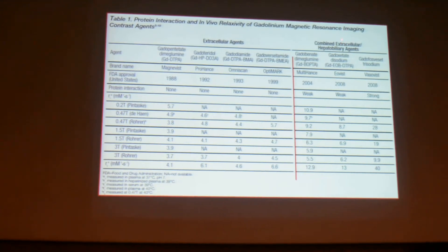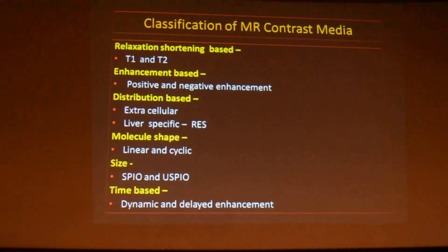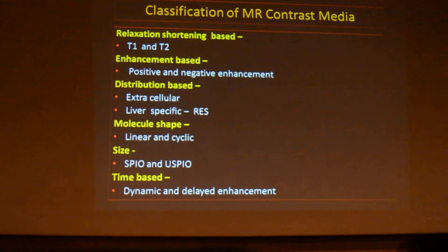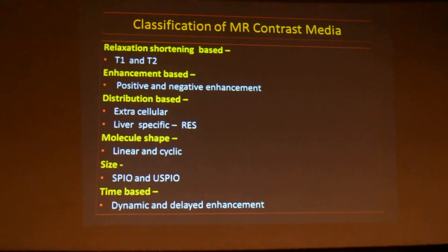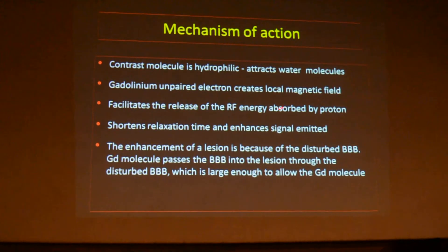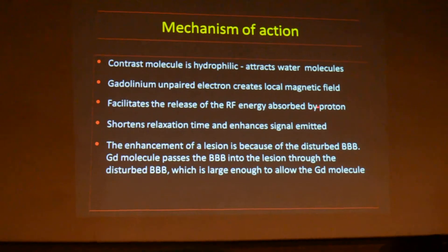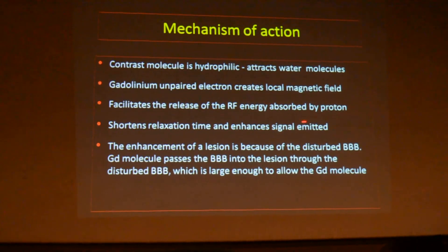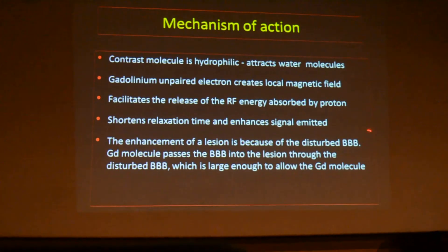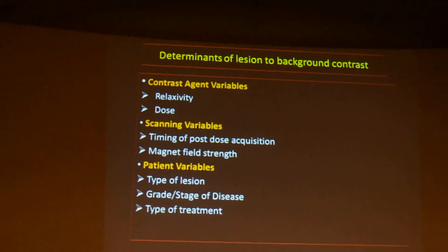We have both intra- and extracellular contrast agents, and multi-hance has a better role among these contrast agents. Classification depends on relaxation time, enhancement, distribution, molecule shape, size, and time base. The MR contrast is hydrophilic, so it attracts water molecules. Gadolinium has unpaired electrons which create a local magnetic field, facilitating the release of RF energy absorbed by the proton, shortening the relaxation time and enhancing the signal emitted. The lesion is seen because of a disturbed blood-brain barrier, where accumulation of contrast medium appears as hyperintense signal on post-contrast images.